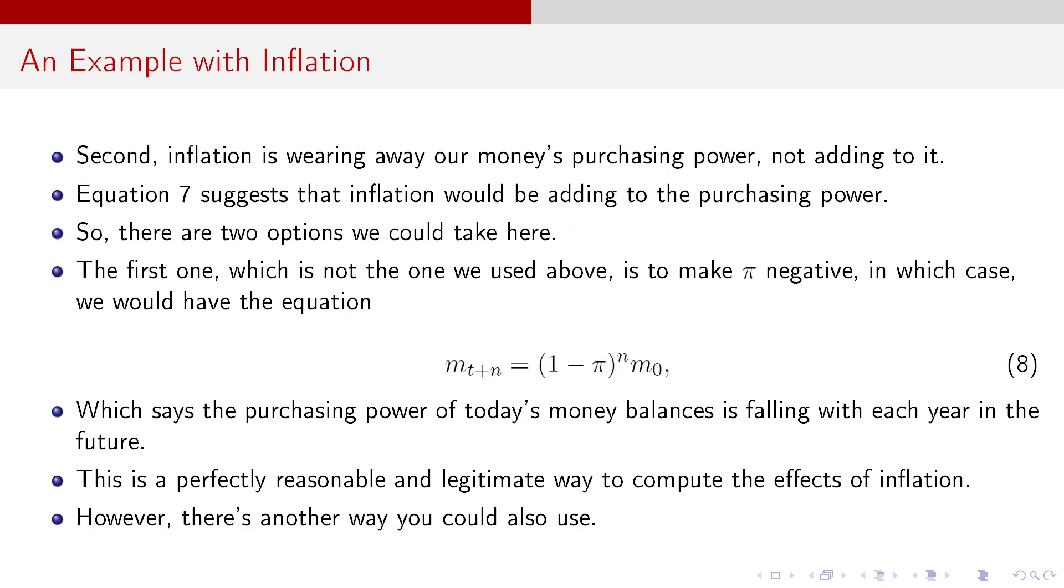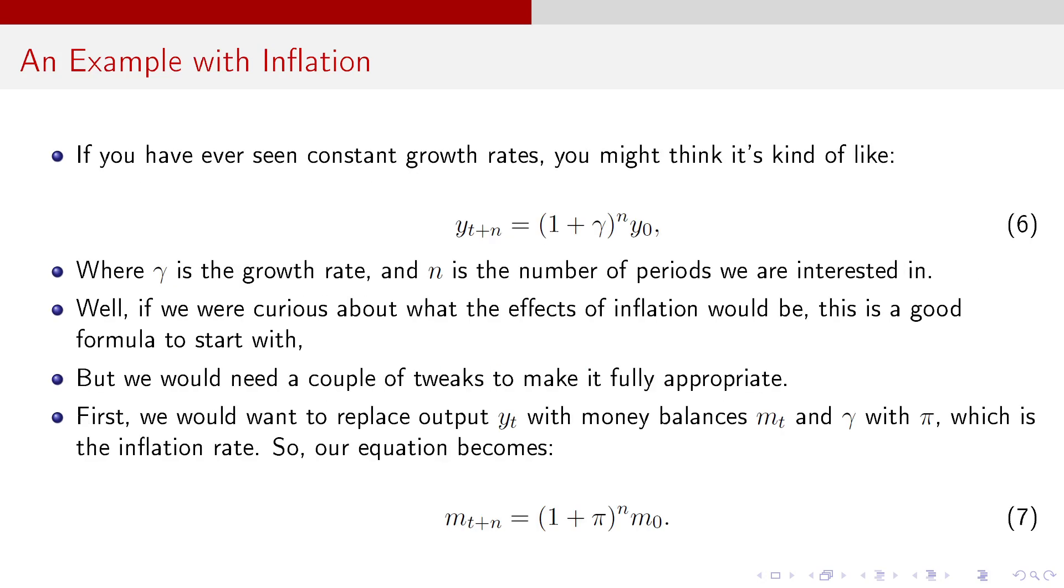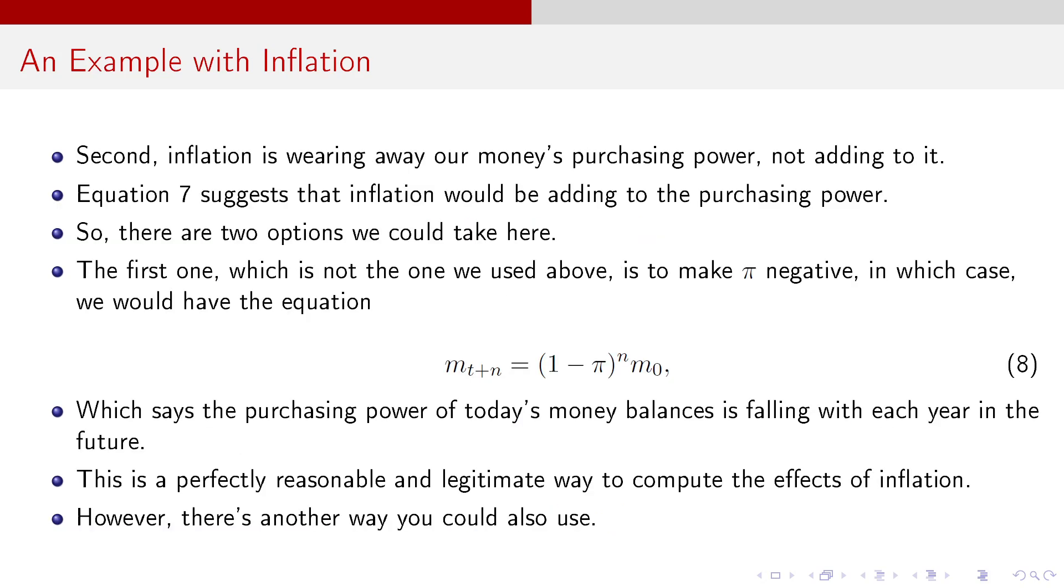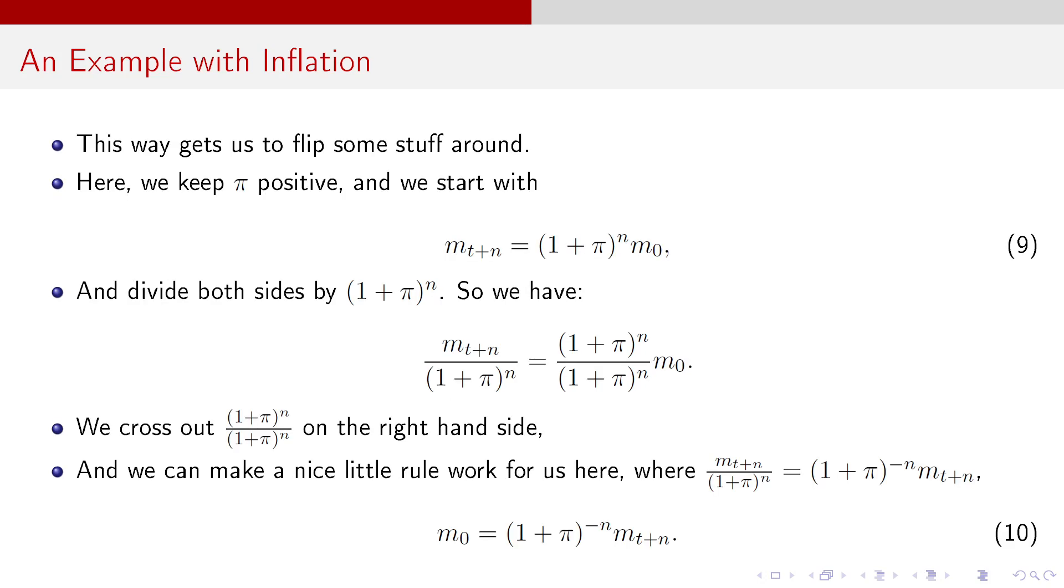Now, second, inflation is wearing away your money's purchasing power, not adding to it. Equation seven here suggests the opposite, that inflation would be adding to the purchasing power. So there's two options that we could take. The first one, which is not the one that we used above, is to make pi negative, in which case you just have M_{t+N} equals (1-pi)^N times M_0, which says the purchasing power of today's money balances is falling with each year in the future. Now, a reasonable, legitimate way to try to compute the effects of inflation, but there's another thing you could actually use instead.